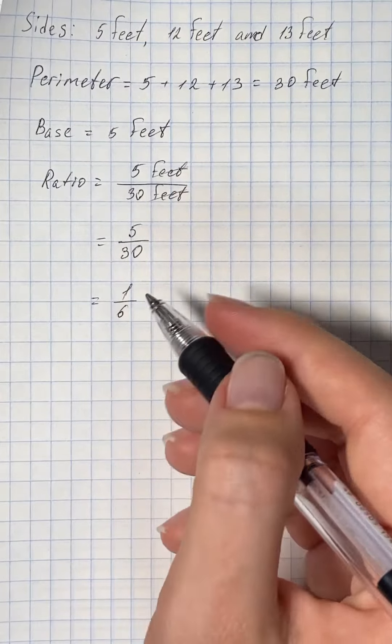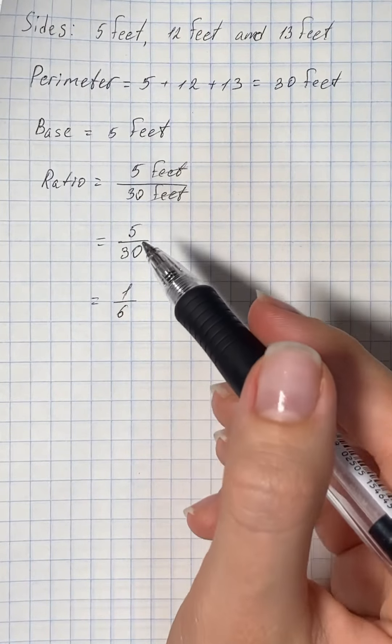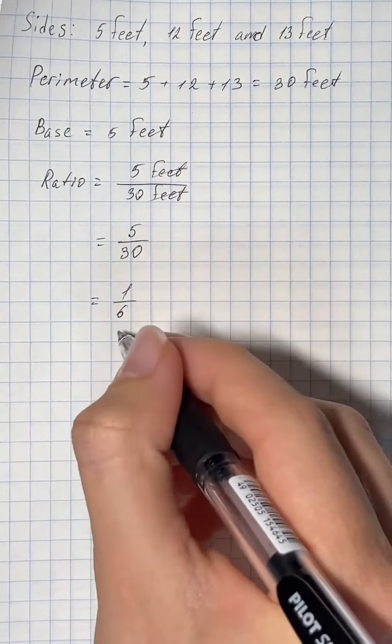Therefore, the ratio of the base to the perimeter of triangular mainsail is 1 to 6.